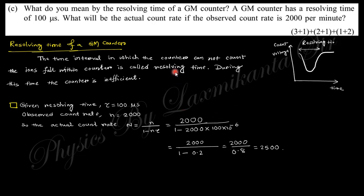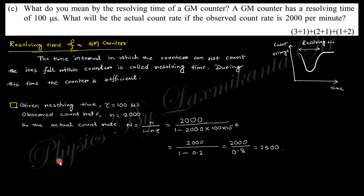A GM counter has a resolving time τ = 100 microseconds, and the observed count rate is n = 2000 counts per second. The actual count rate N is given by N = n / (1 − nτ), where n is the observed count rate and τ is the resolving time. Substituting these values, the actual count rate comes out to be 2500 counts per second.